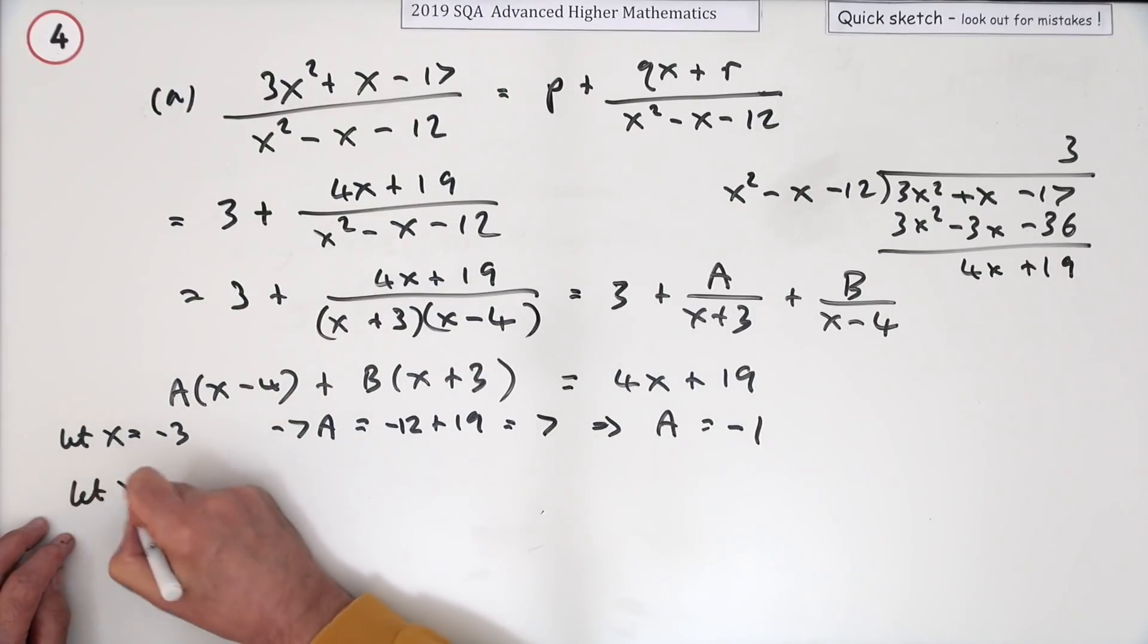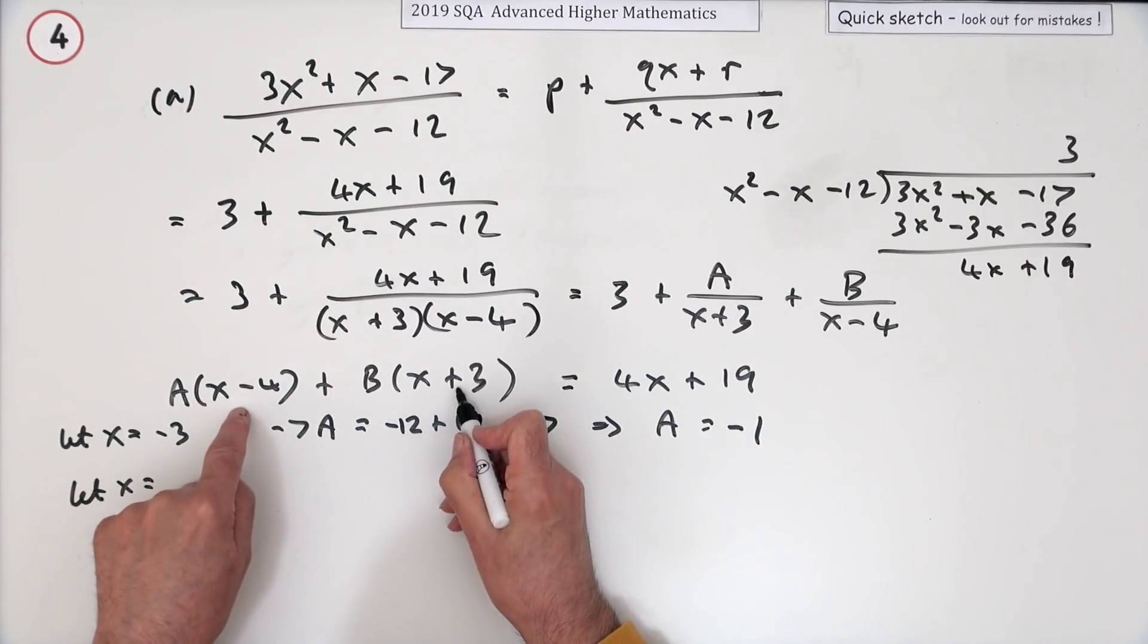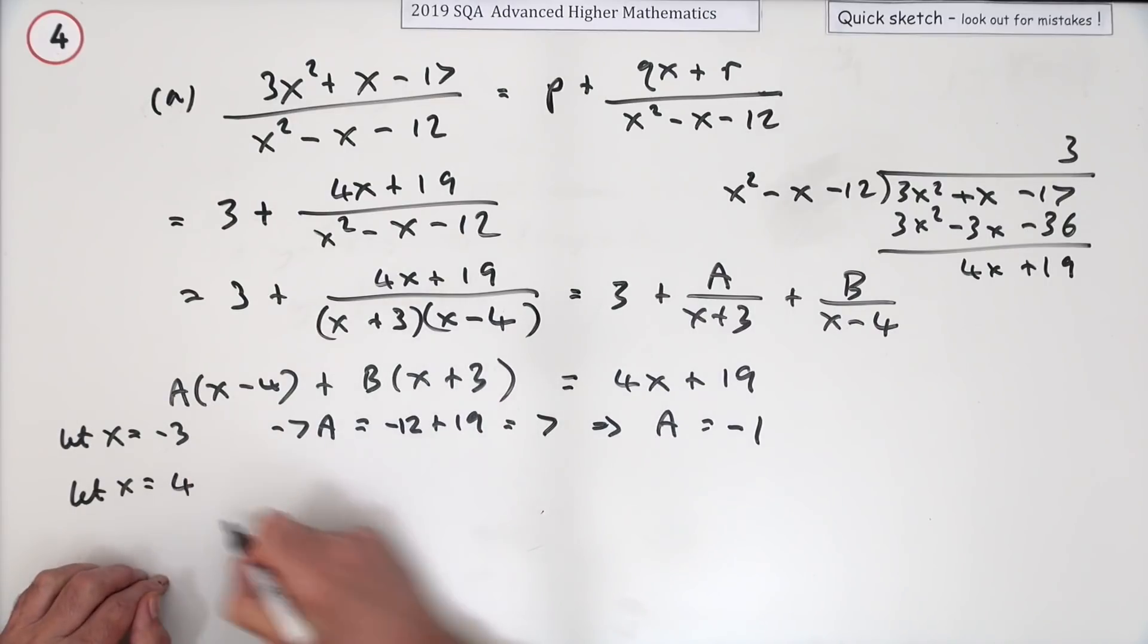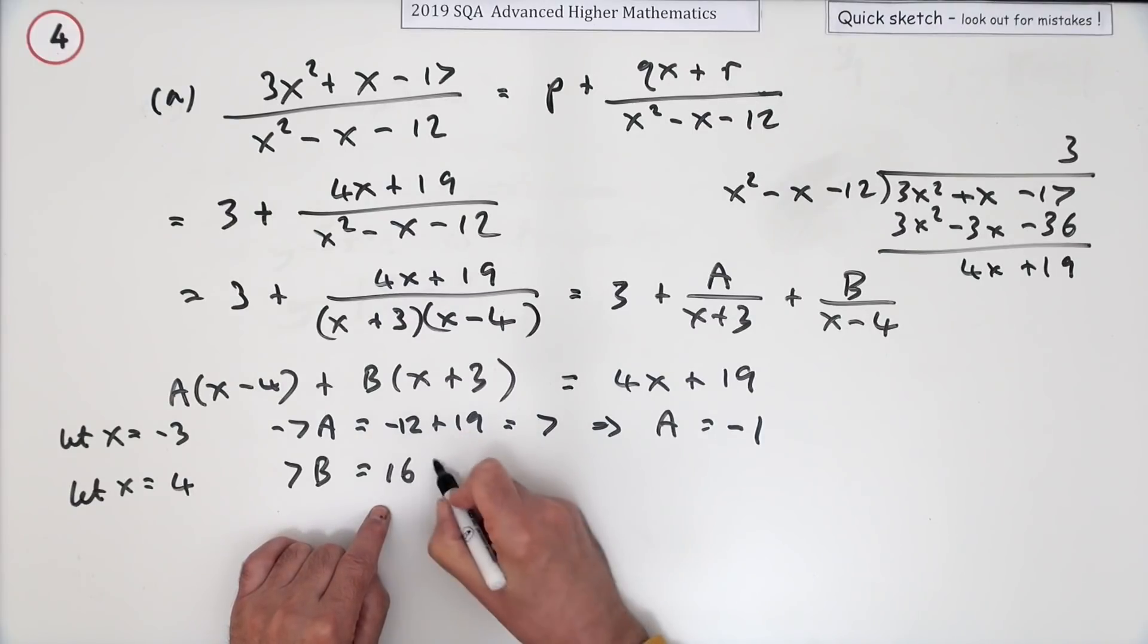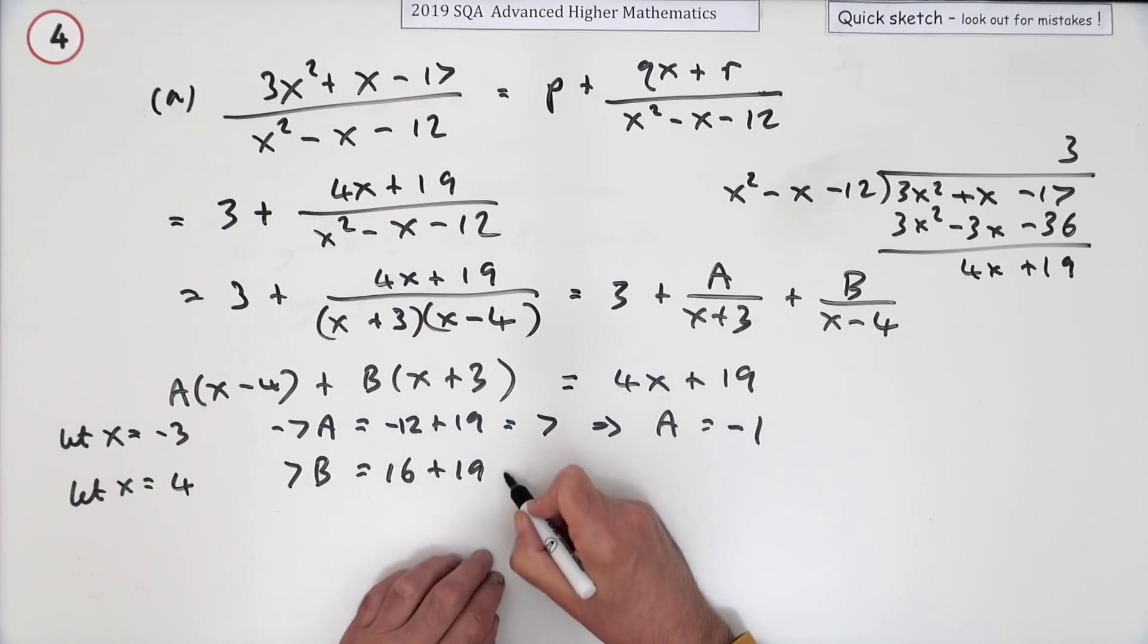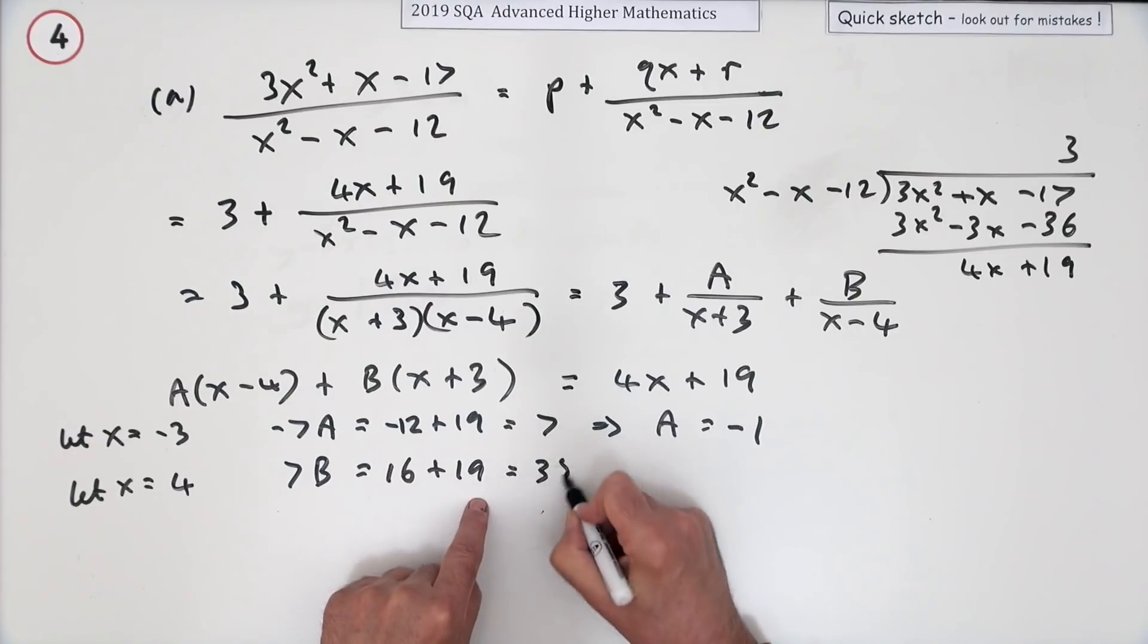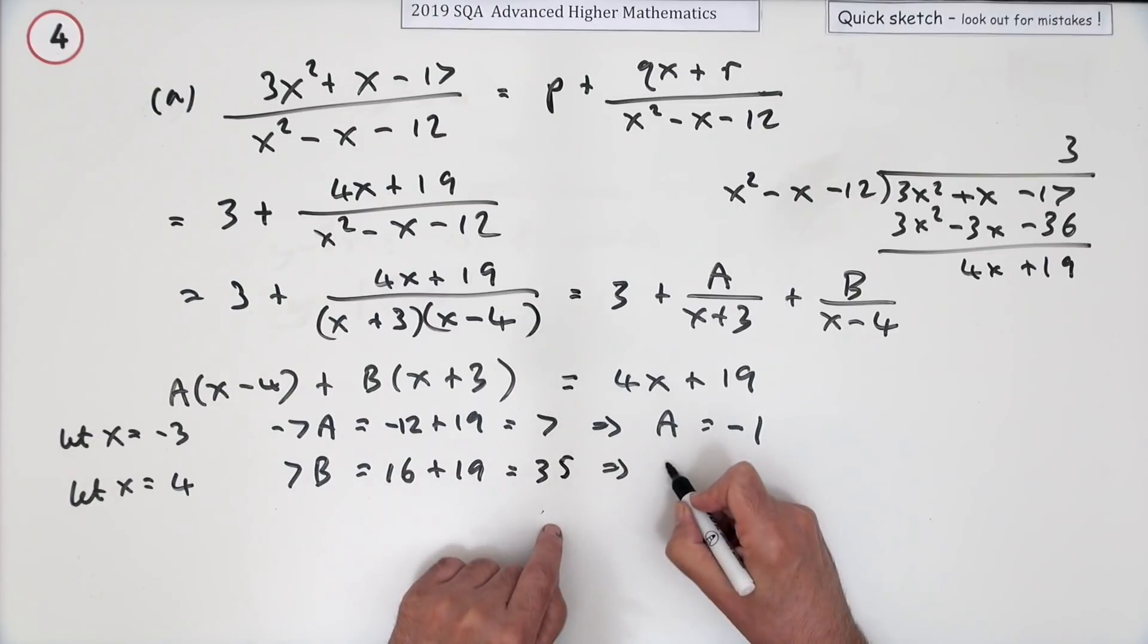And then let x equal to knock this out to get this one. x equal 4, so you've got 7B equals 16 plus 19, which will be 35. 7 fives, so B is equal to 5.